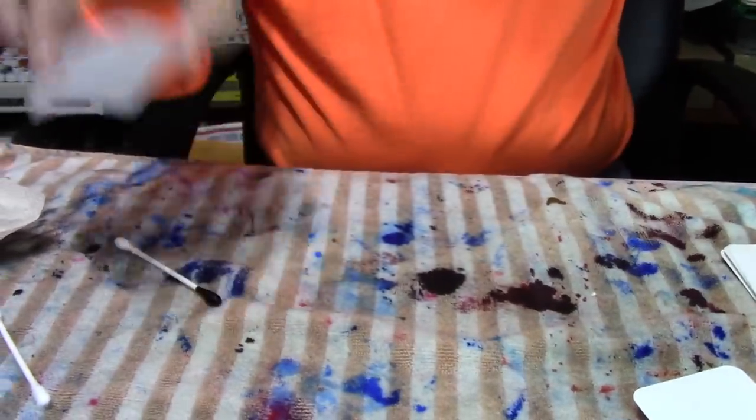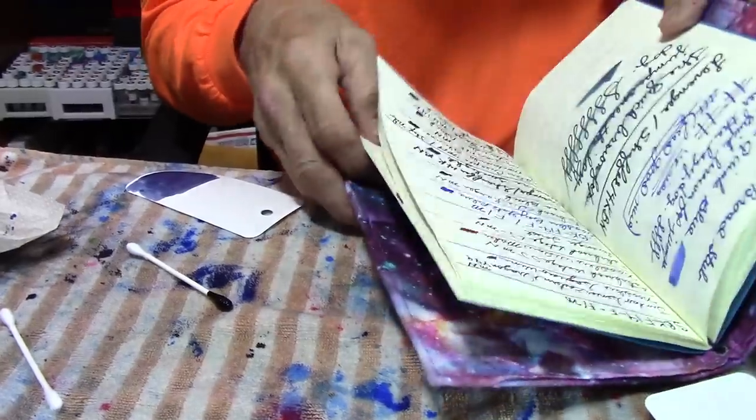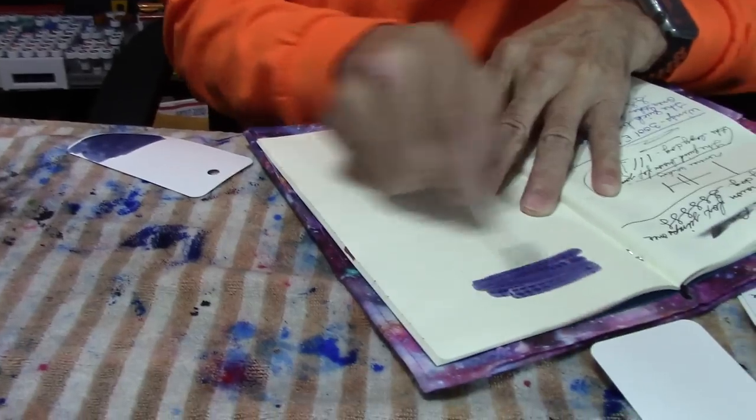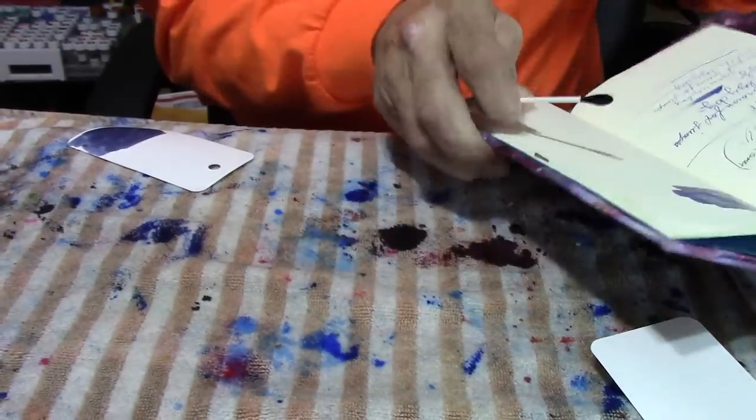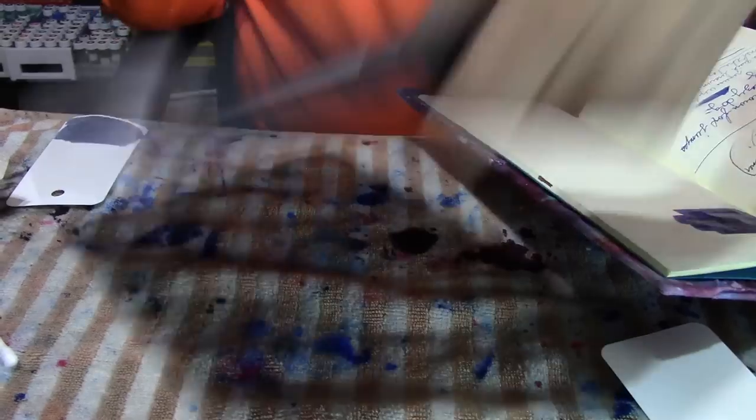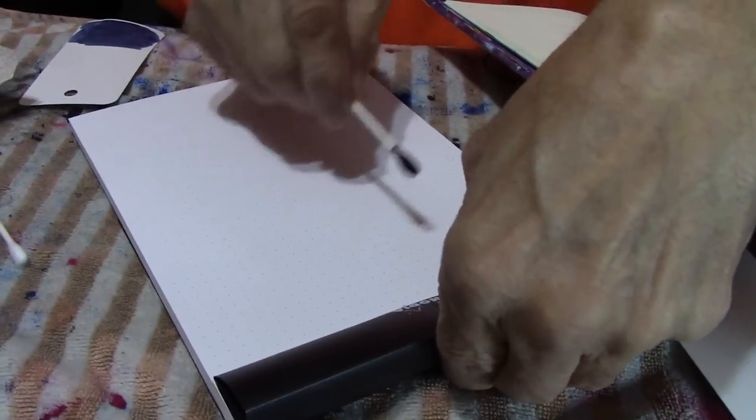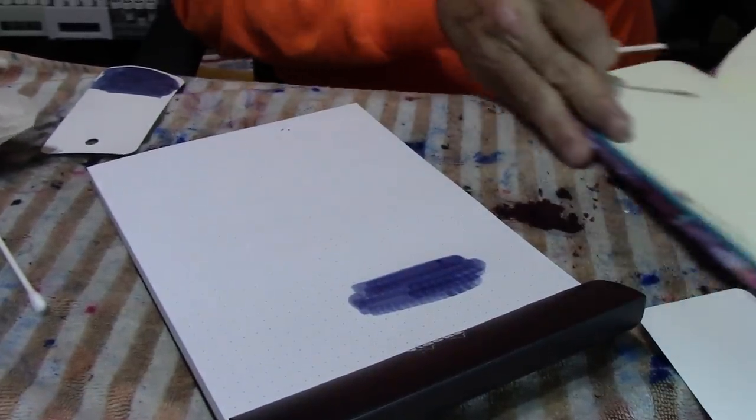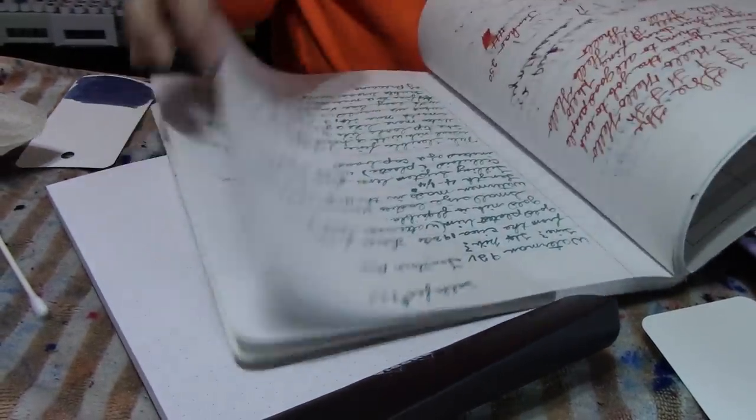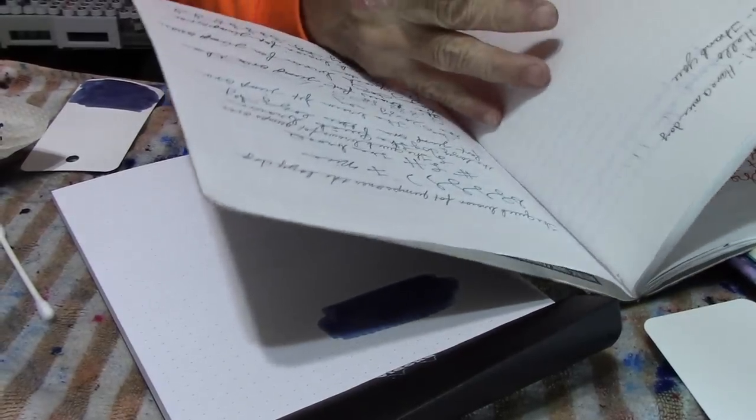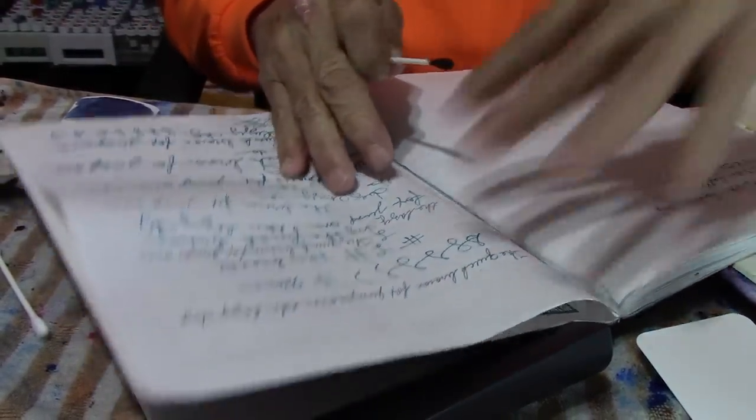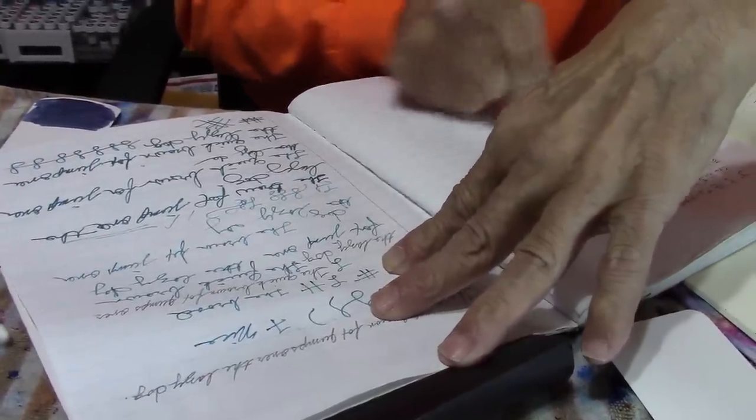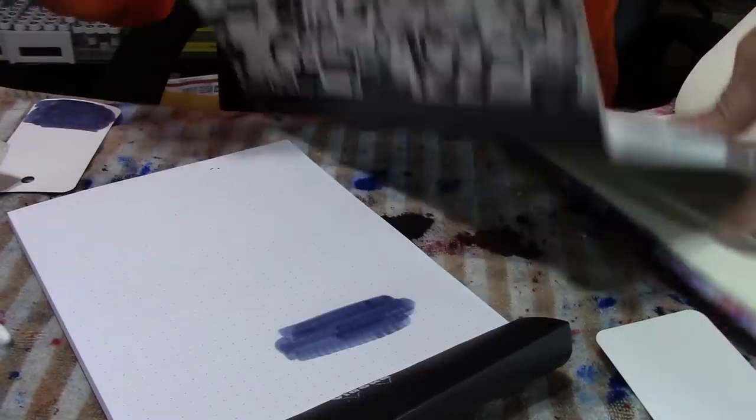Close that up. And let me get some Tomoe River paper. Right here. And we're going to just do that as well. And last but not least, I'm going to do some Rhodia paper. And last but not least, let me get some regular notebook paper. That way you can see what it's going to look like.